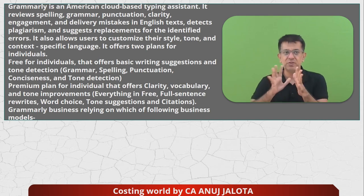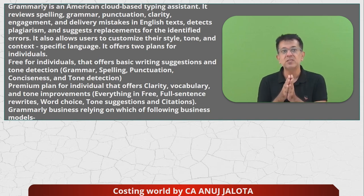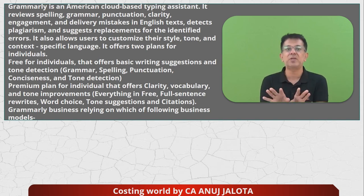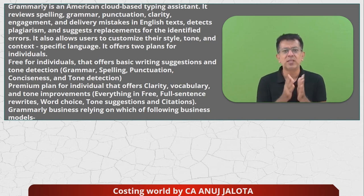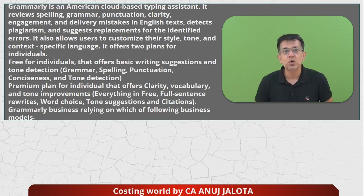The free model is what I have. Then there is a premium plan for individuals that offers clarity, vocabulary, and tone improvements, full sentence rewrites, word choice, tone suggestions, and citation. Obviously the premium plan has far more features — it has everything in the free plan plus many extra things. You might also know that YouTube has a similar kind of feature: the normal YouTube has ads coming; if you go for YouTube Premium, ads will not come. That is the same model.